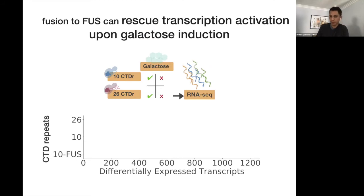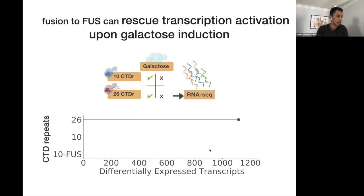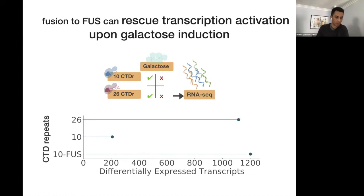To confirm this rescue is transcriptional, I did an RNA-seq experiment adding galactose to strains with wild-type or 10 CTD repeats. Galactose has a very strong transcriptional phenotype in yeast — over 1,000 transcripts are differentially expressed. With 10 CTD repeats, only a fraction of those transcripts are differentially expressed. When you add FOS, you get almost a complete rescue of the number of differentially expressed transcripts.